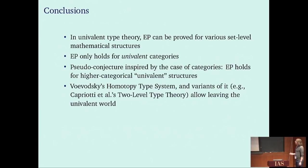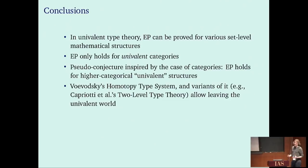As a wrap-up and conclusion: in univalent type theory, the equivalence principle can be proved for various set-level mathematical structures, as illustrated for monoids. However, for higher categorical structures such as bicategories, the equivalence principle only holds for univalent categories. We can hope to generalize this to other higher categorical structures by suitably generalizing the notion of univalence, but this hasn't been fully done yet.